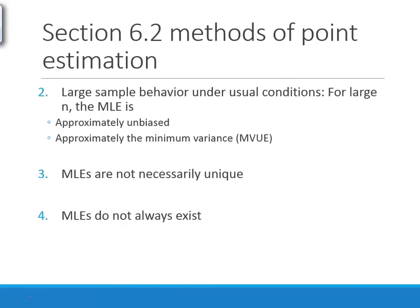Some additional notes on MLEs: they are not always unbiased, but with a large sample size they are approximately unbiased and have approximately the smallest variance of any estimator — a nice asymptotic property. MLEs are not necessarily unique, though in this class they almost always will be, and they don't always exist. That brings us to the end of the lecture; the remaining time is for homework questions.